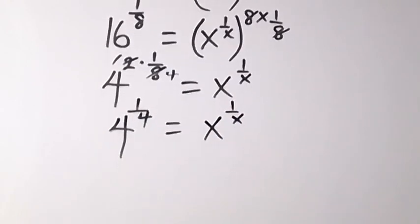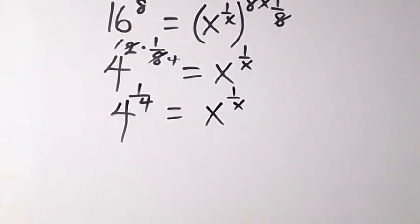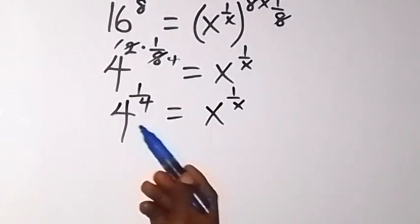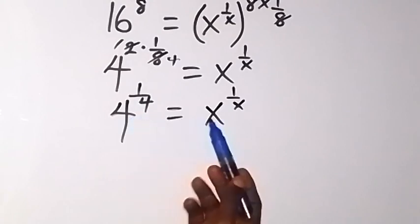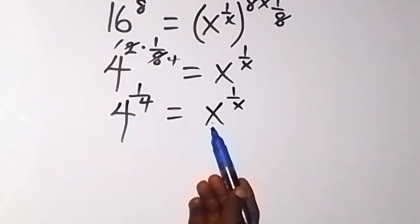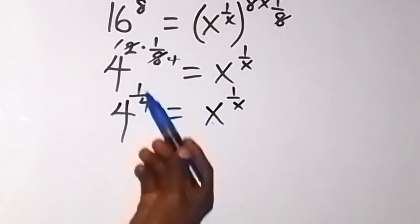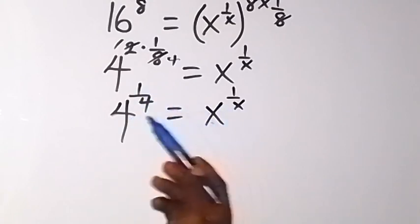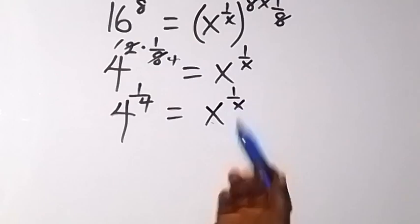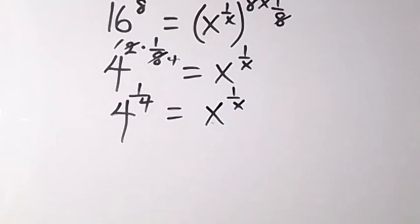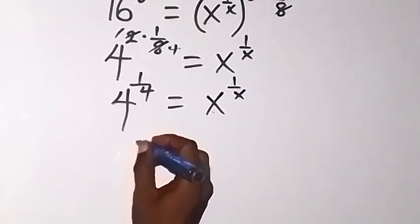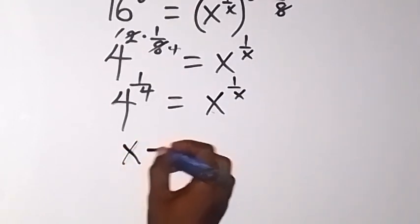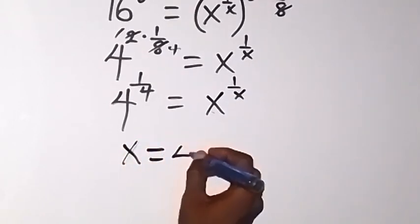And from here, clearly we can see that this base is 4 and this one is x. Also, you have this fraction — this is 1 over 4 and this is 1 over x. So clearly, we can conclude that x is equal to 4.